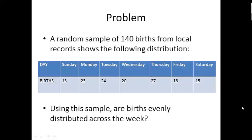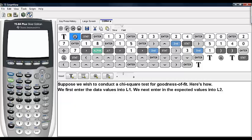Suppose we wish to conduct a chi-square test for goodness-of-fit. Here's how you can do it on the TI-84 calculator. First, enter the data into L1 and the expected counts into L2. Go under STAT, hit ENTER, and start typing in the data values.